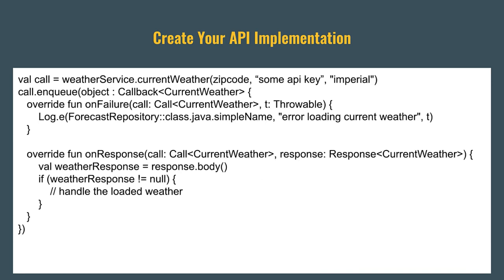Once we have the generated implementation of our API service, we can make use of it like this. I'm calling weatherService.currentWeather, passing in a zip code, an API key, and the units, and I'm getting back our Call object. We can then use this Call object in an asynchronous fashion by calling enqueue and passing in a callback. This will load the data on a background thread and then call us back on the main thread, letting us know if there was any type of failure or giving us back the response from the network.